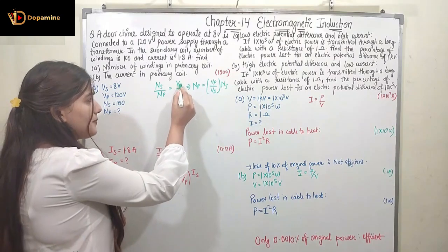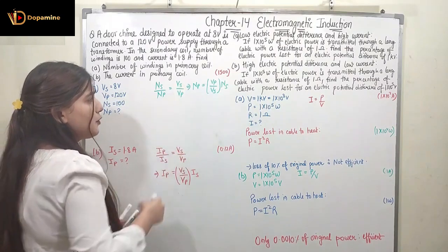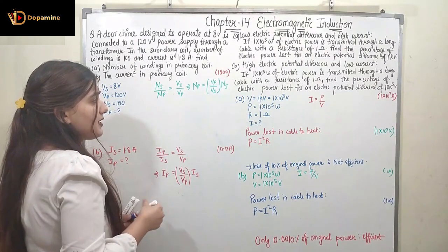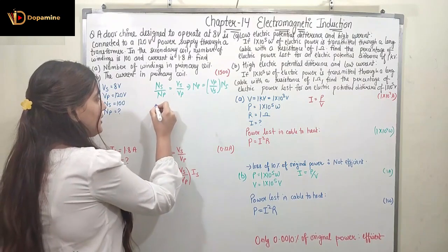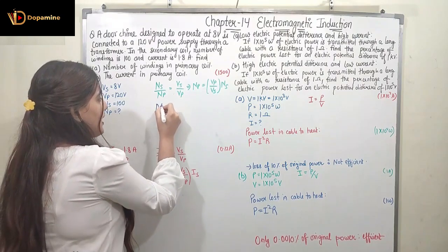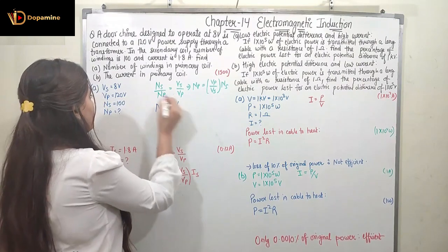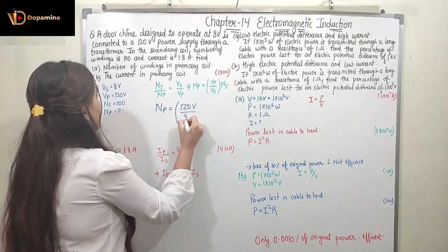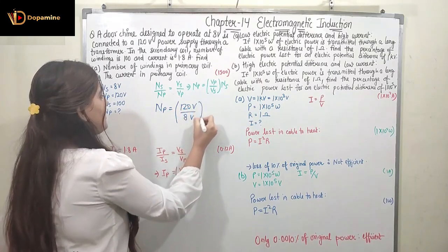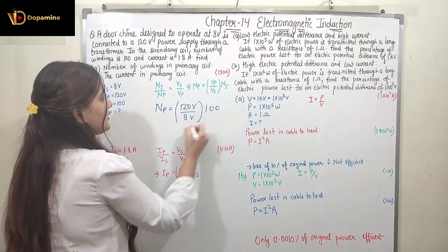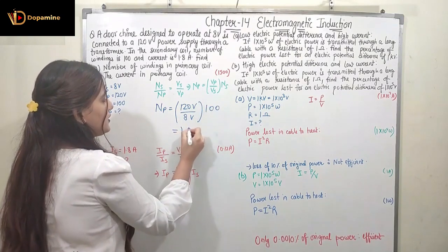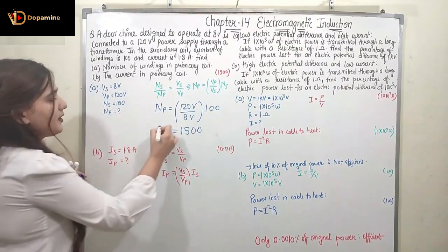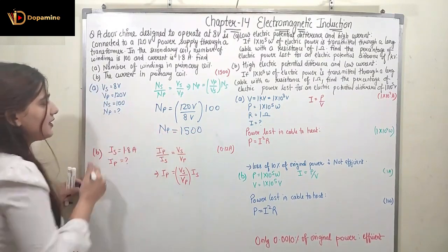We can write Ns/Np = Vs/Vp, which means Np = (Vp/Vs) × Ns. Putting in the values: Np = (120/8) × 100 = 1500. So the number of turns in the primary is 1500.